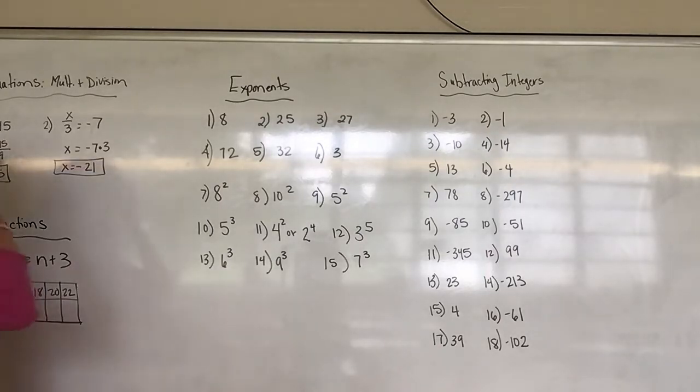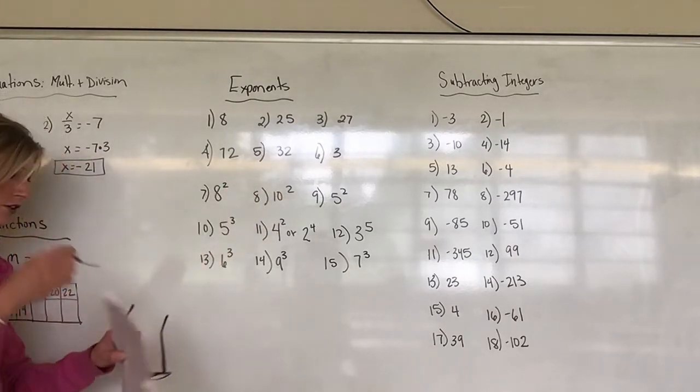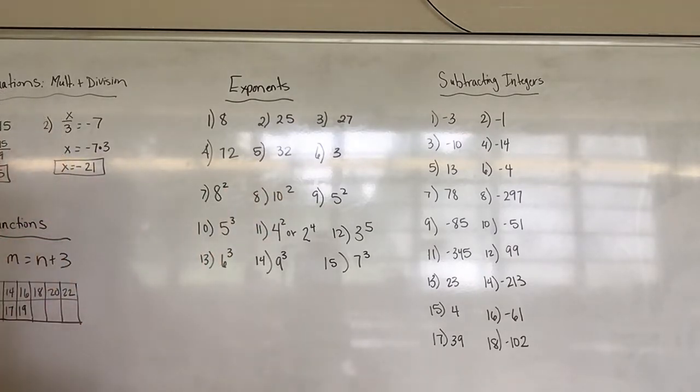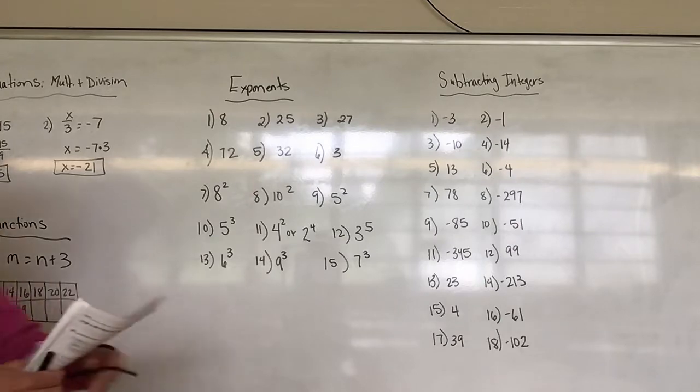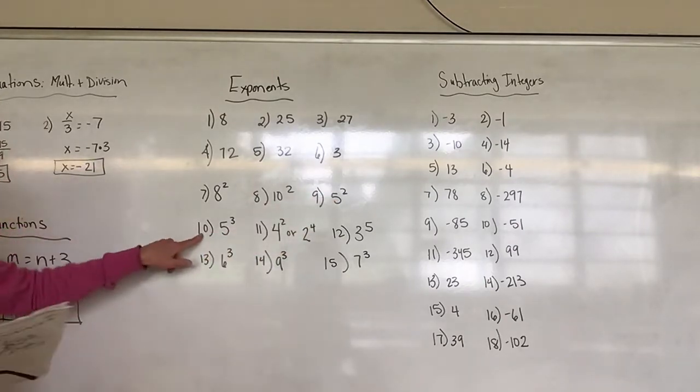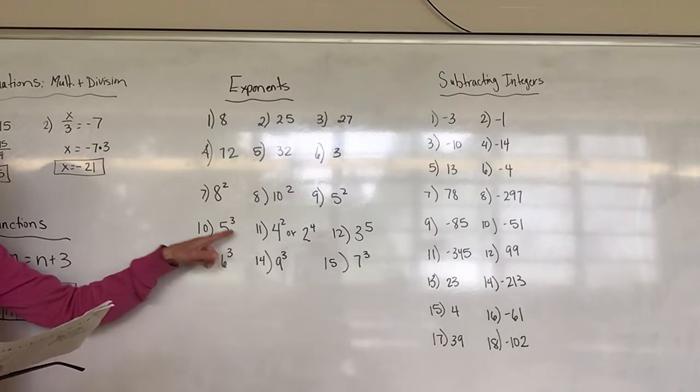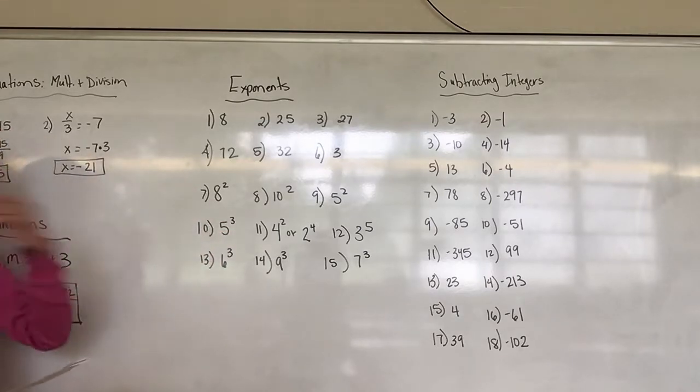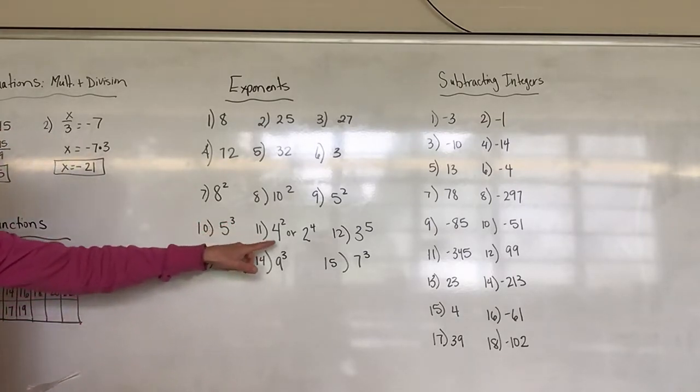Okay, number 8 is 10 to the second power, we can say squared. Number 9 is 5 squared, number 10 is 5 to the third power or also cubed.